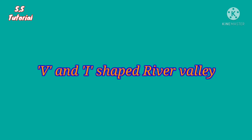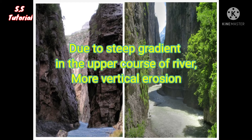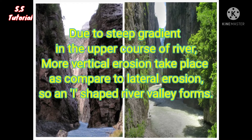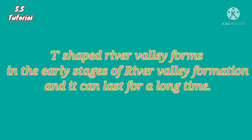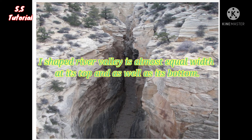In the upper course of a river, due to steep gradient, the river flows very fast. That's why greater vertical erosion takes place as compared to lateral erosion at the underlying surface. So a very steep-walled site with a deep and narrow valley forms, which is more deeper than its width. It looks like the English alphabet I, that's why it is known as I-shaped river valley. I-shaped river valley forms in the early stage of river valley formation and cannot last for a long time. It is almost equal in width at its top as well as its bottom.